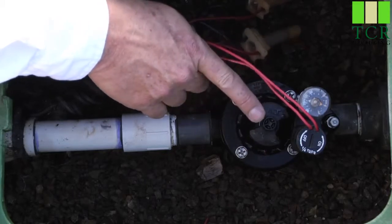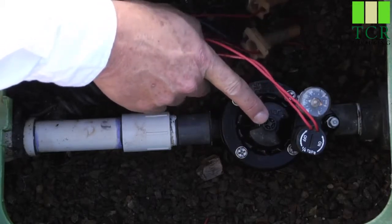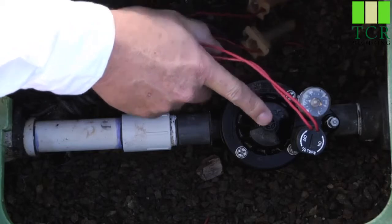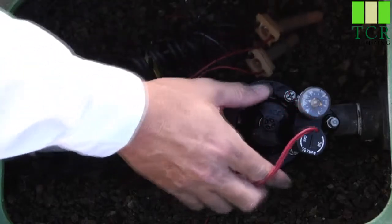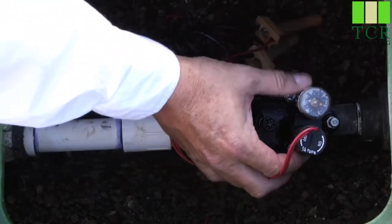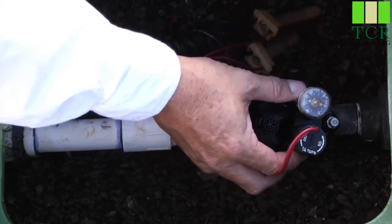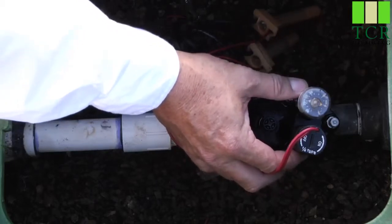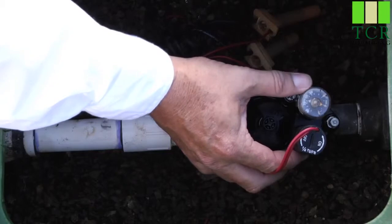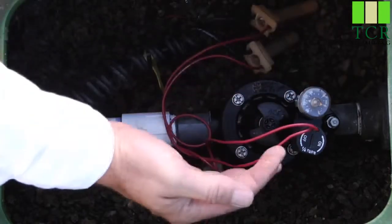In the center of that we have the manual bleeder screw. That will manually actuate the valve, and as well there is an AccuSet pressure regulator. That's a field installed accessory. It allows you to dial in the exact pressure that you want after the valve.